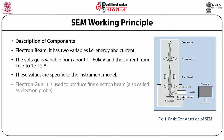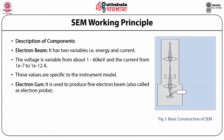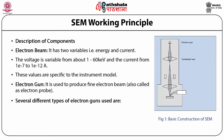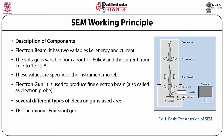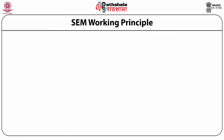Next is the electron gun. It is used to produce a fine electron beam, also called an electron probe. There are several different types of electron gun which are used: TE thermionic emission gun, FE field emission gun, and SE Schottky emission gun. Let us now discuss these three types of guns one by one.